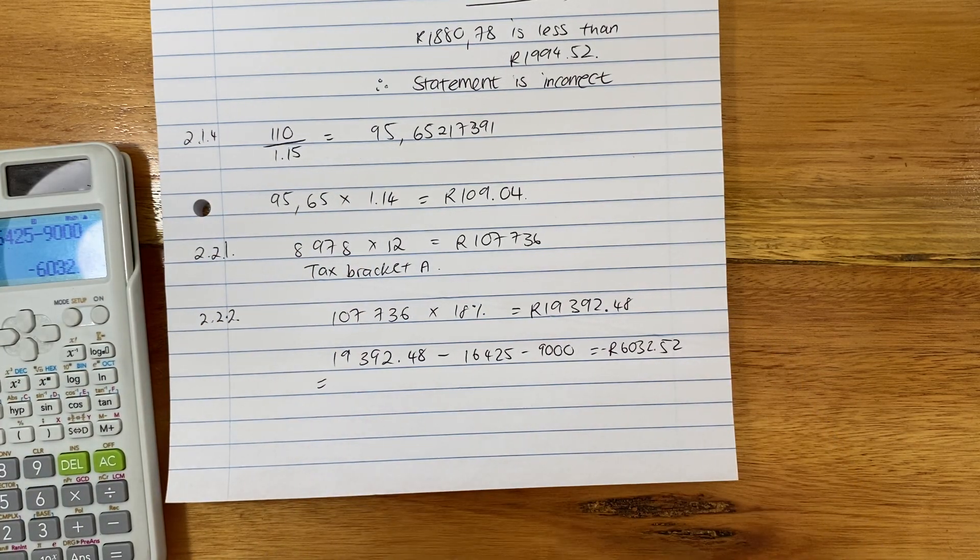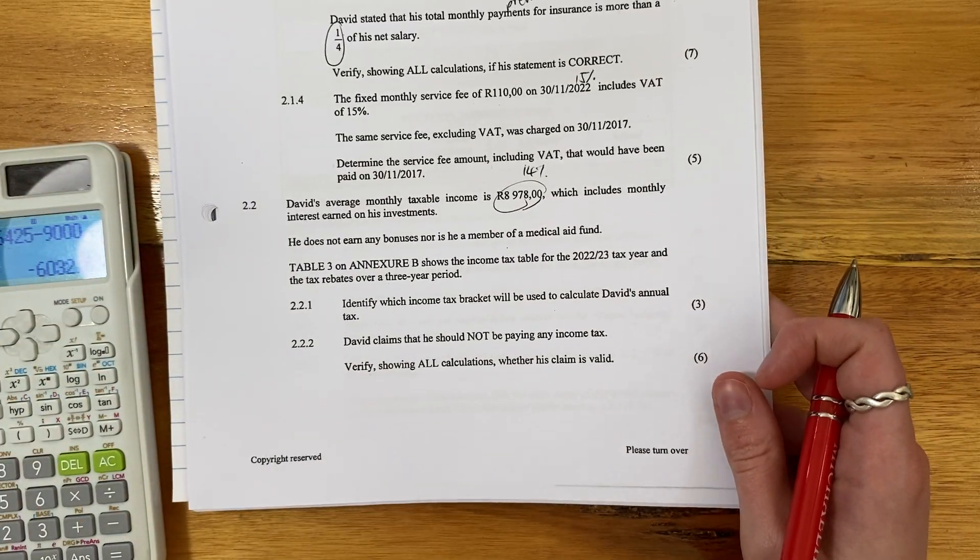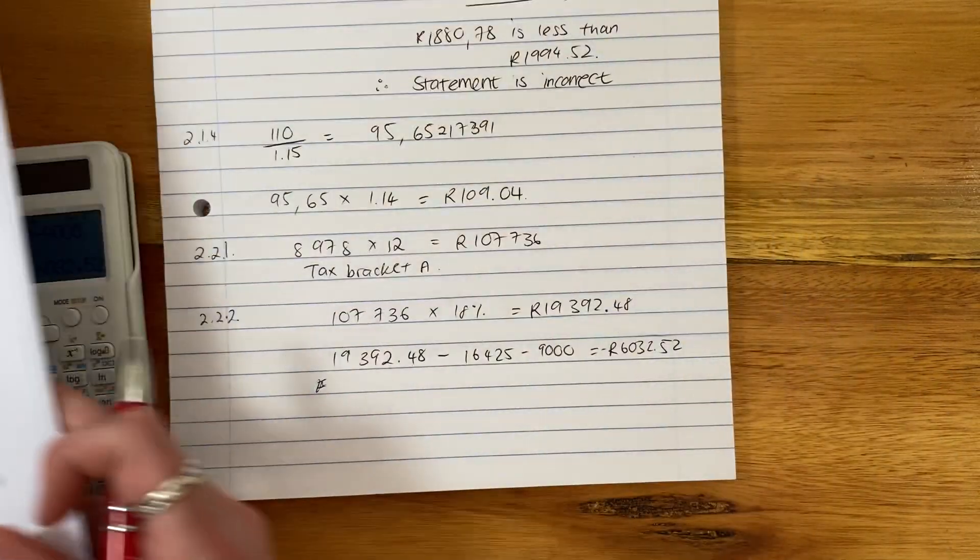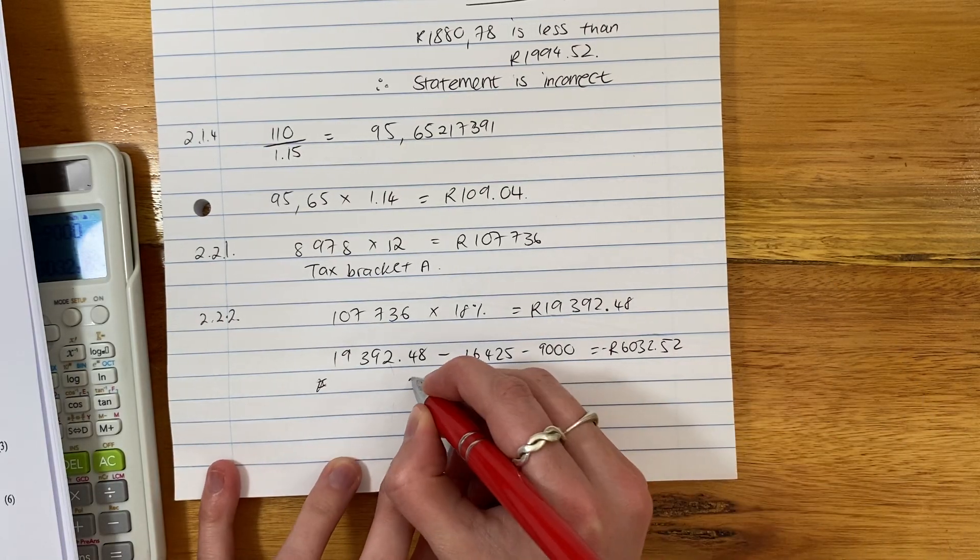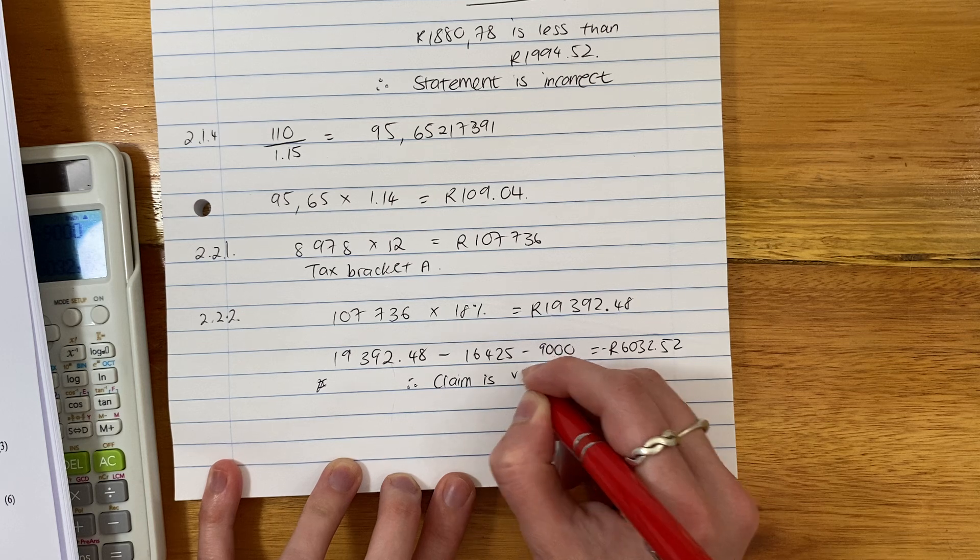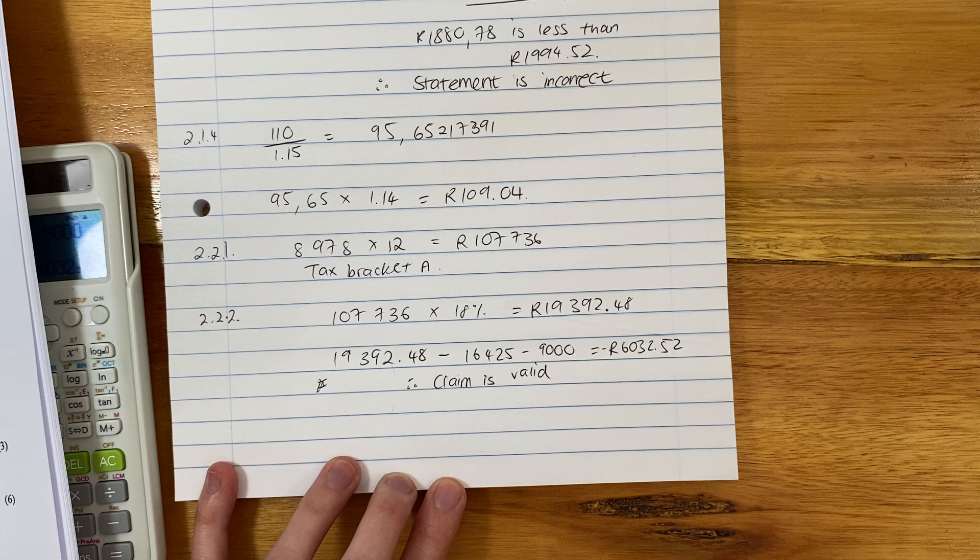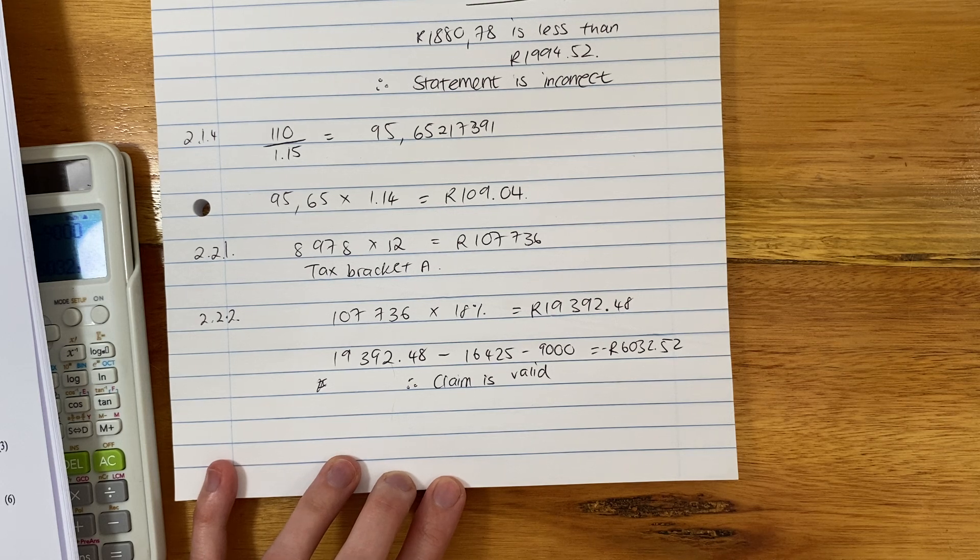Well, that's quite interesting, because what does that mean? It means that there's negative tax. Negative tax means you don't pay tax. So in this instance, his claim is valid. And you have to say that. Students always forget. So please finish off. Claim is valid. And then you're done. That is us done with 2.2. Let's move on to 2.3.